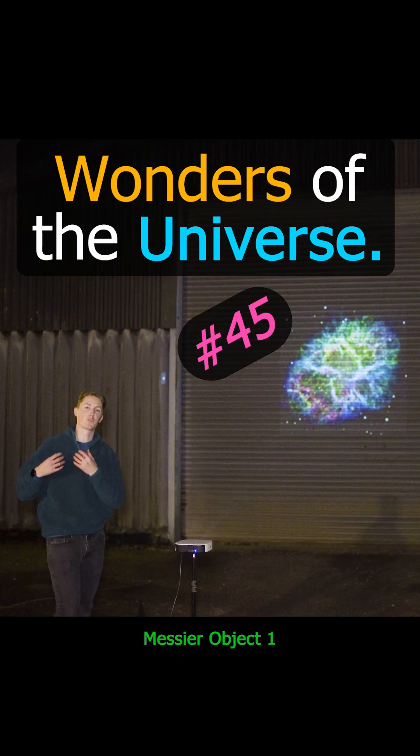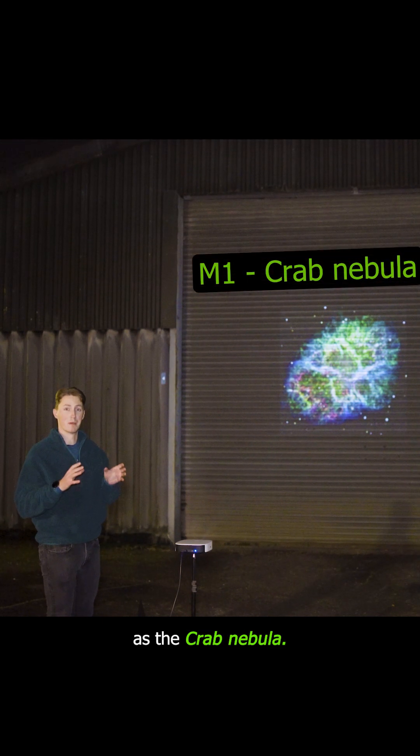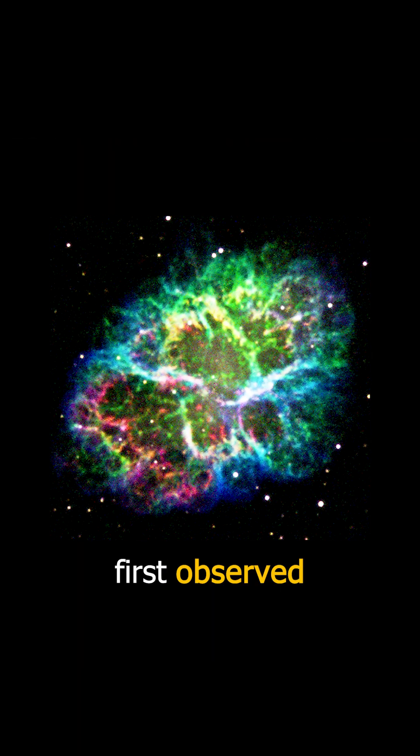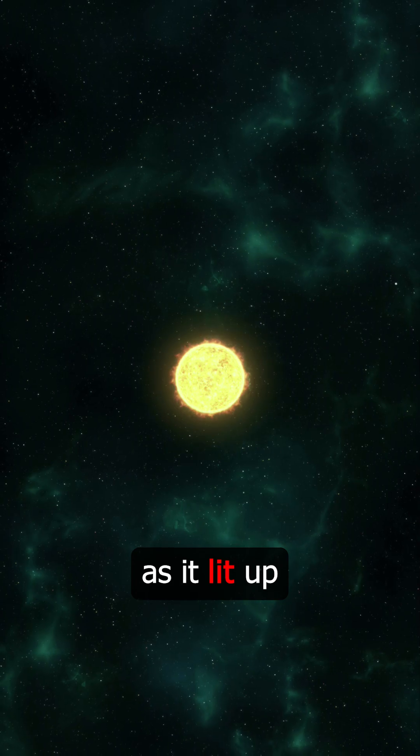Next up we have Messier Object 1, otherwise known as the Crab Nebula. This formed in 1054 AD. It was first observed by Chinese astronomers as it lit up our night sky.